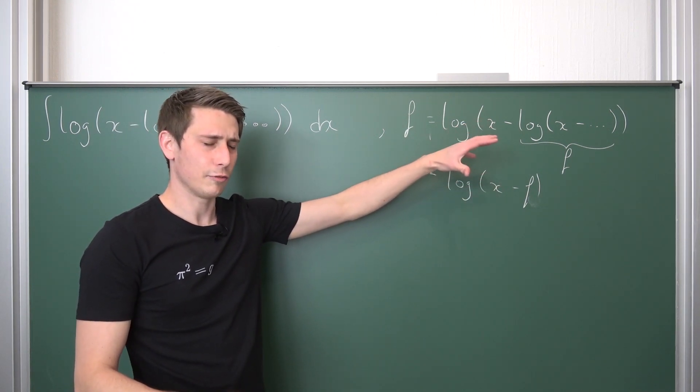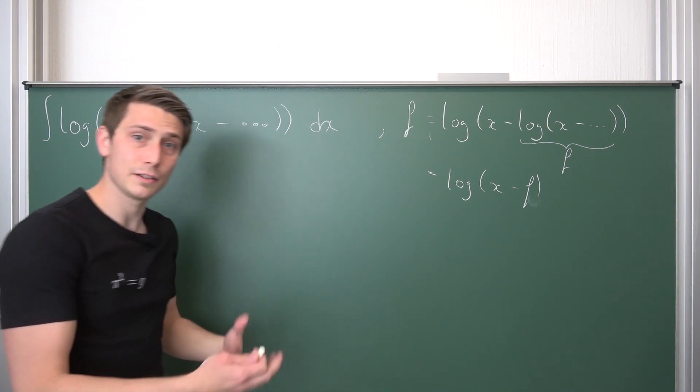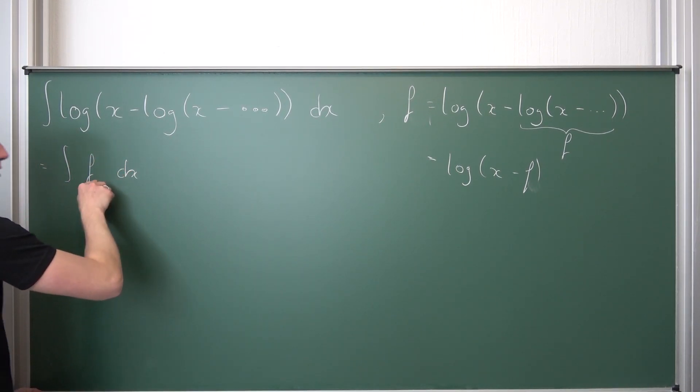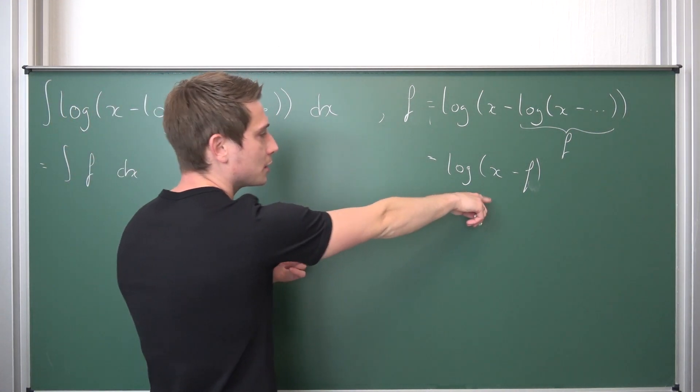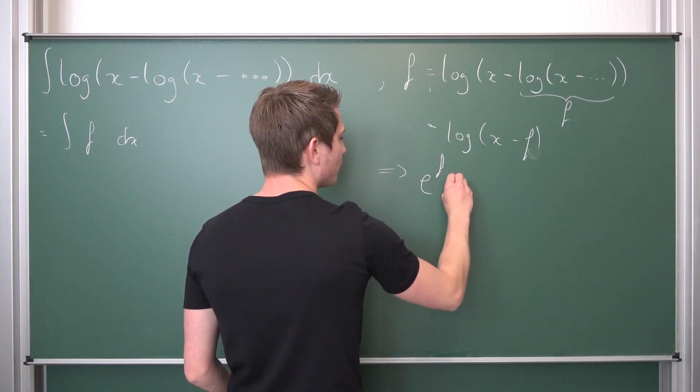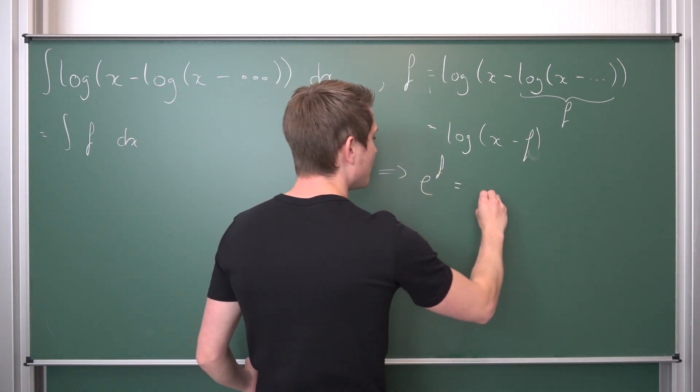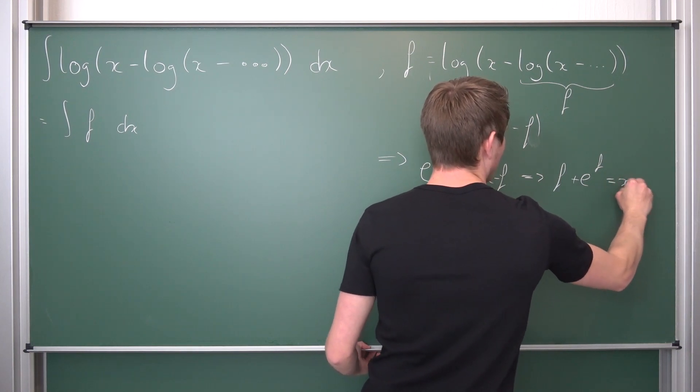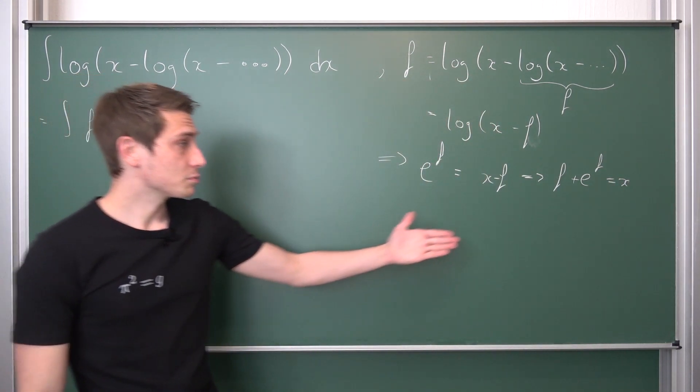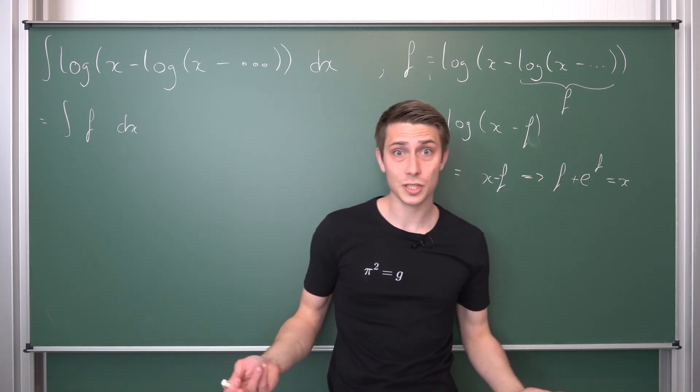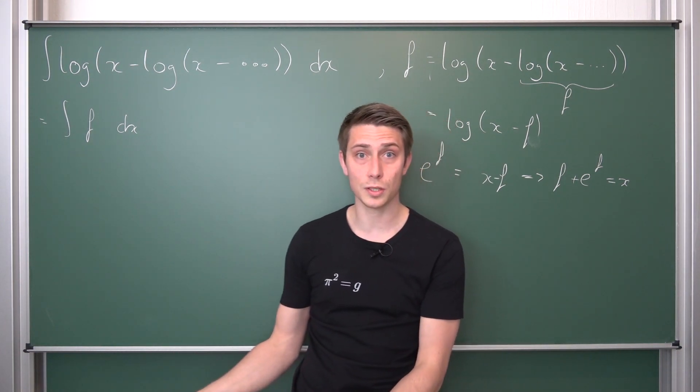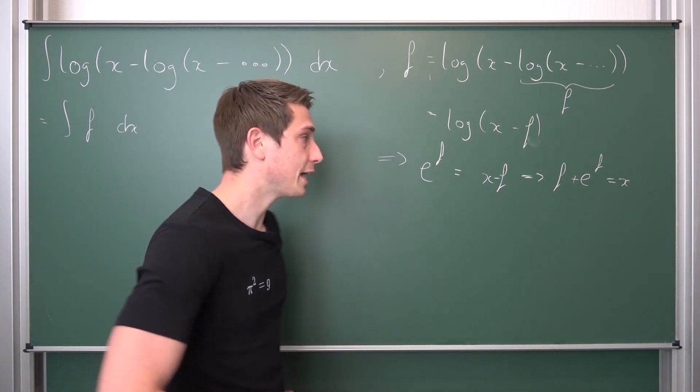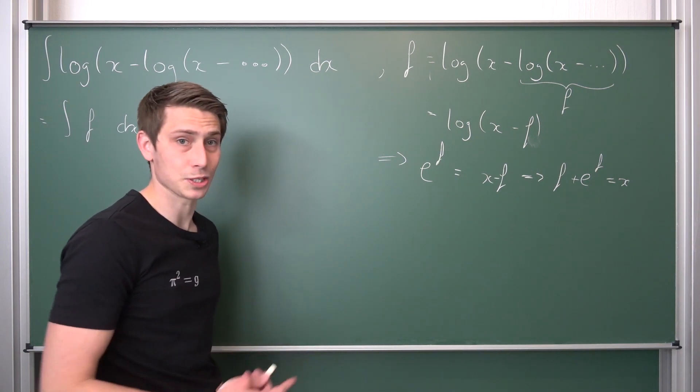Now we can solve for f, separating x in the process, then differentiate to get our differential dx. Overall what we have is the integral of f dx. We can take the exponential function on both sides. e^f is equal to x - f. We can add f on both sides with no restrictions, so f + e^f equals x. This acts like a substitution. We can differentiate both sides with respect to f using implicit differentiation.